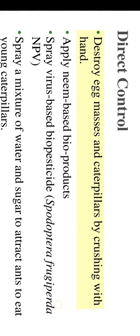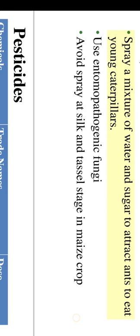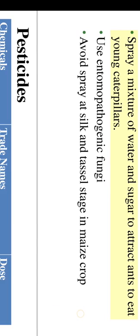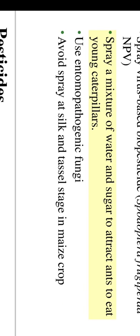Direct control: destroy egg masses and caterpillars by crushing by hand. Apply neem-based bioproducts. Spray virus-based biopesticide Spodoptera frugiperda NPV. Spray a mixture of water and sugar to attract and kill young caterpillars. Use entomopathogenic fungi. Avoid spraying at silk and tassel stage in maize crop.